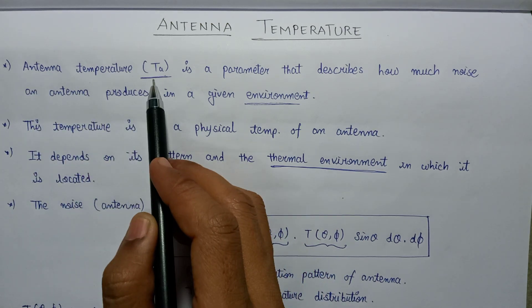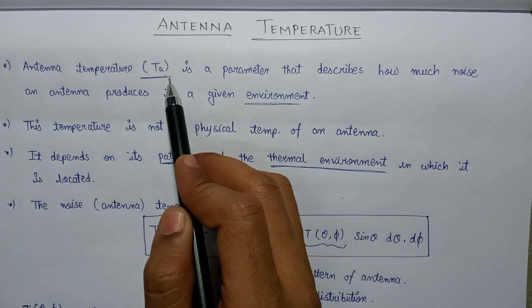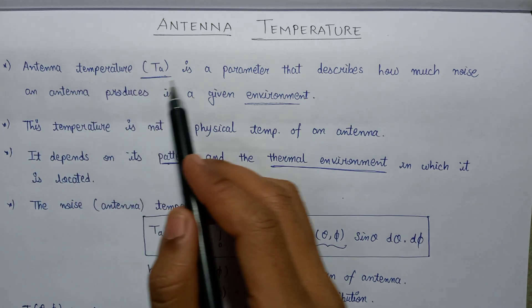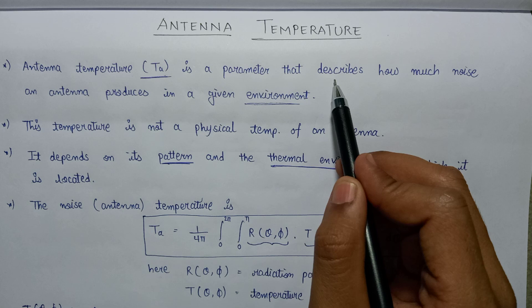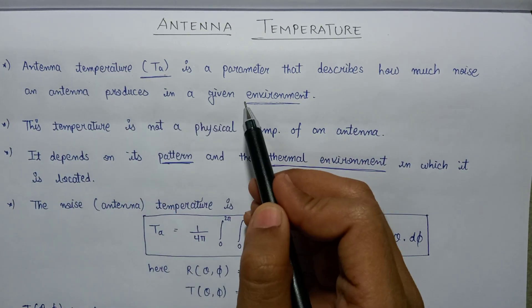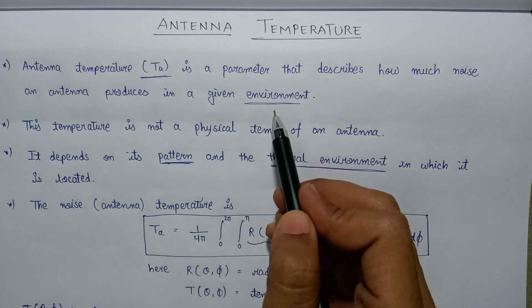Antenna temperature is denoted by T of A. It is a parameter that describes how much noise an antenna will produce in a given environment if it is placed in that environment.